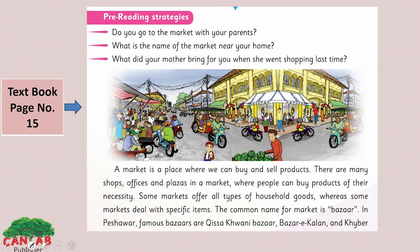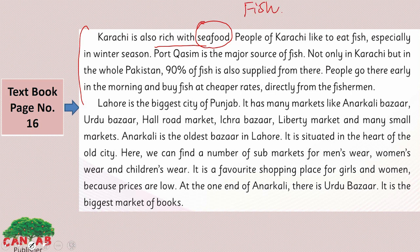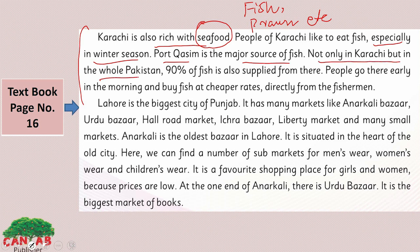We continue from page No. 16. Karachi is also rich with seafood — fish, prawns. People of Karachi like to eat fish, specially in winter season. Port Qasim is the major source of fish not only in Karachi but in the whole of Pakistan. 90% of fish is also supplied from there. People go there early in the morning to buy fish at cheaper rates directly from the fishermen. So Karachi is also famous for its seafood.